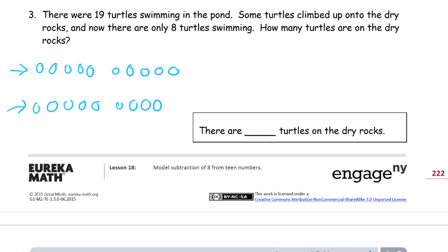Taking 8 away. There's 2 left. So it's 2 plus—sorry that 2 looks like a Z. A lot of times my 2's do look like Z's. And this of course is the 9 from the 10 and 9. And that's 11. There are 11 turtles on the dry rocks.